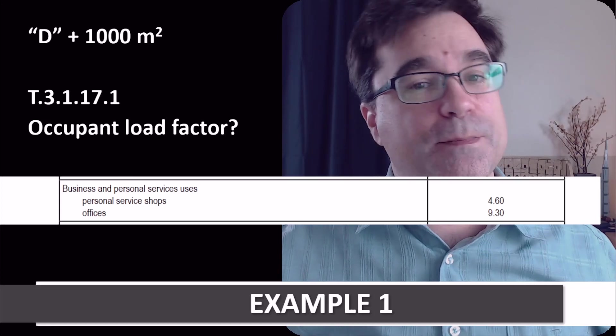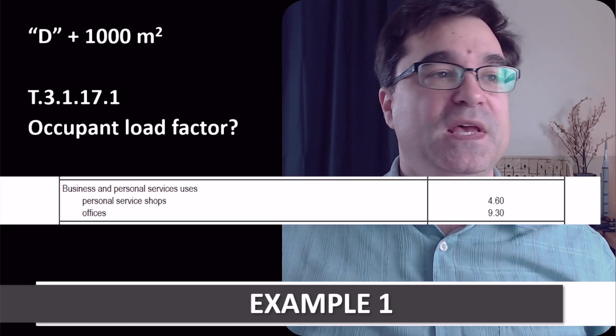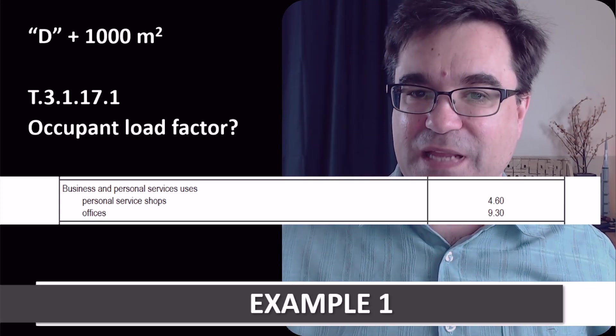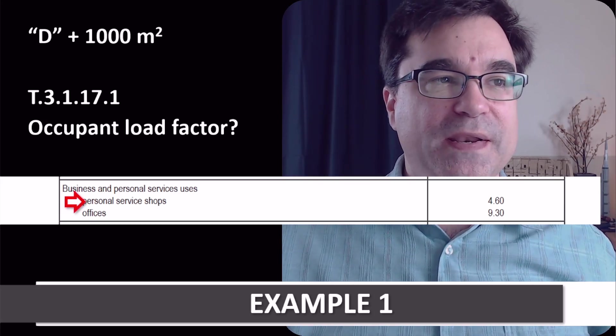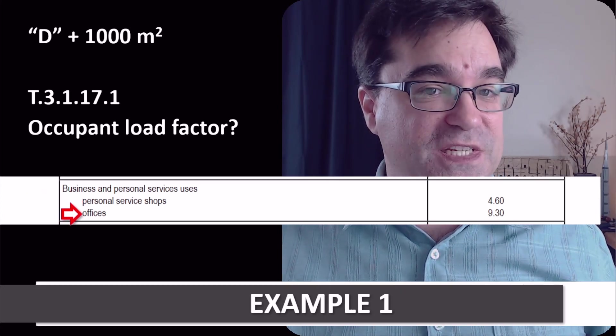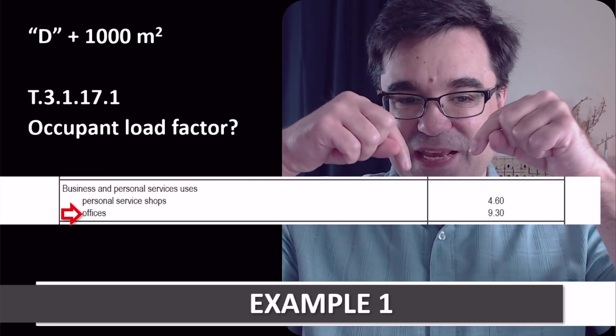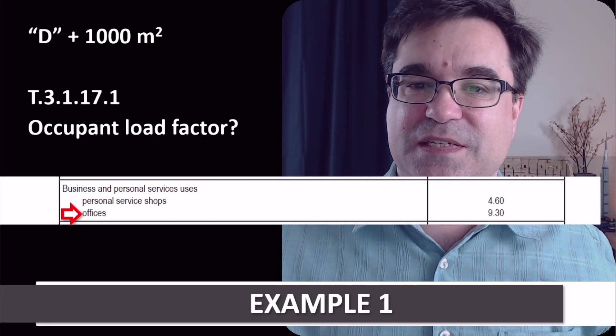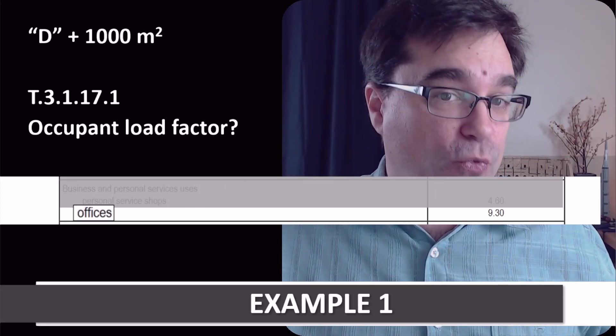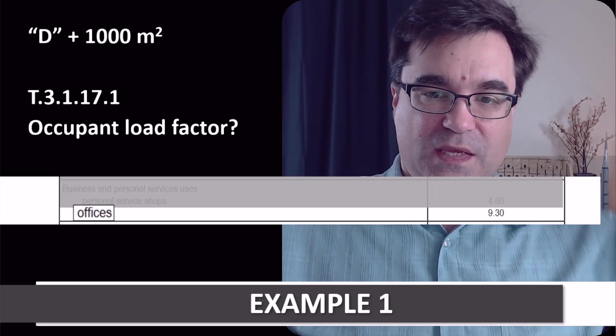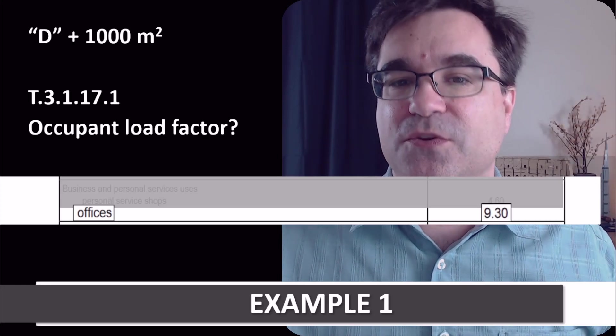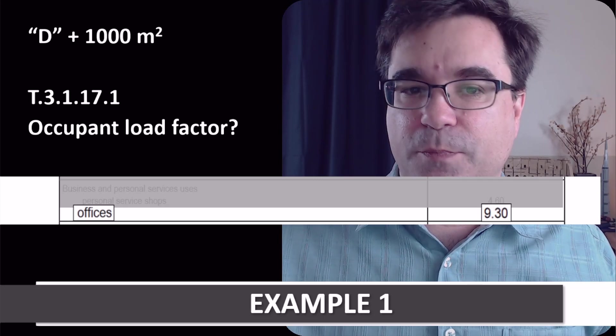We have two entries that we can choose from, right, in the left column. One is for personal services shop. And one is for offices. In this case, for office space, the best selection is offices, right? Which directs us to a load factor right here of 9.30 meters squared per person.